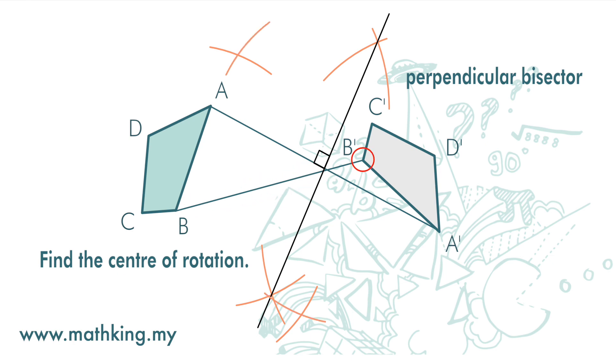Here, where the two perpendicular bisectors intersect, is the center of rotation.